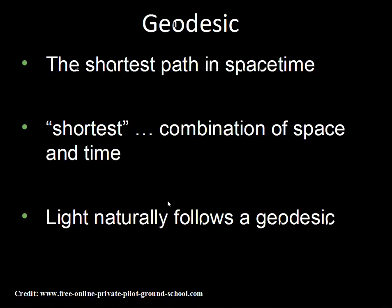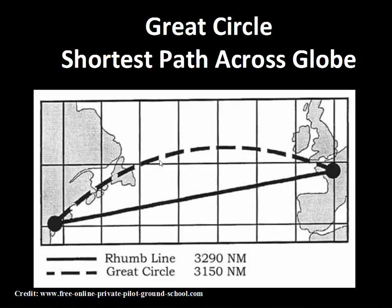Light naturally moves on a geodesic — it takes the shortest path in space-time from point A to point B. On Earth, if you are flying to Europe you might fly over the northeast part of Canada and be able to see Greenland on your way. The airlines take what appears to be a longer path on a flat map, but on a sphere this great circle route is actually a shorter distance. It is a geodesic on the Earth's globe, and airlines save money and time flying this shorter great circle path.